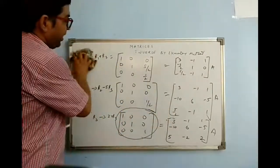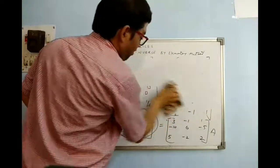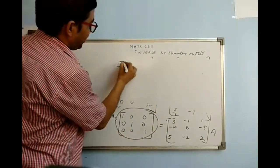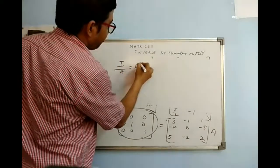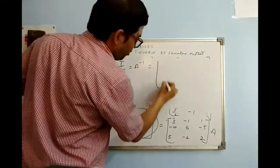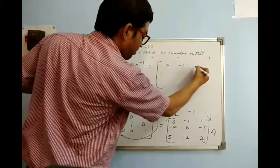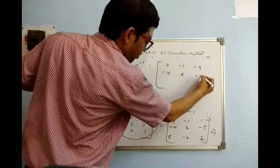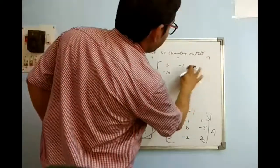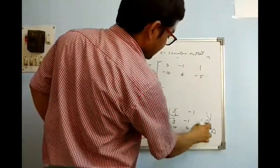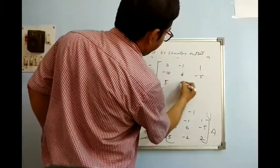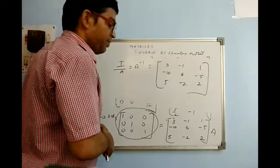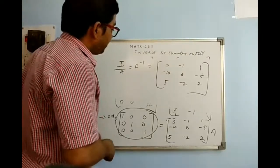This is I. Bringing A to the other side, this is I·A which is actually A inverse. We got A inverse = [3, −1, 1; −10, 6, −5; 5, −2, 2]. It was a little bit long process, but if you systematically follow it you will get A inverse.